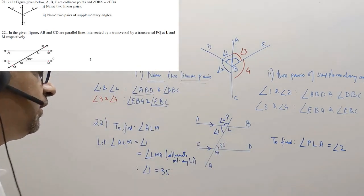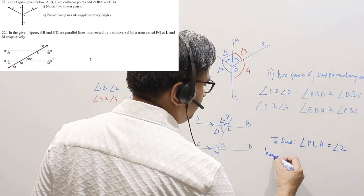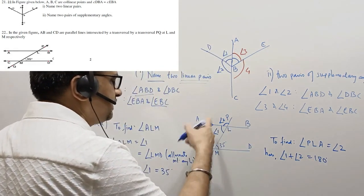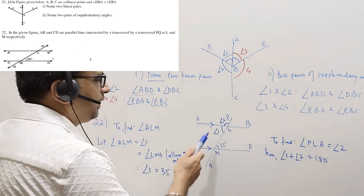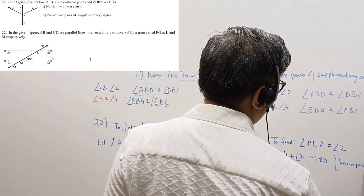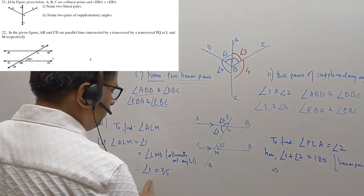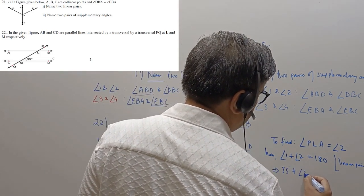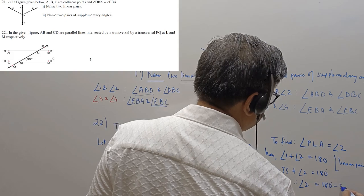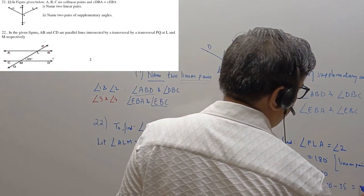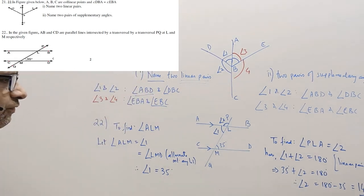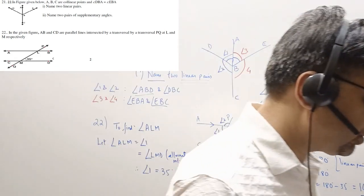Angle 1 and angle 2 form a linear pair. Angle 1 plus angle 2 is equal to 180 degrees. They are adjacent angles and supplementary. We have already found the value of angle 1, which is 35. So 35 plus angle 2 equals 180. Therefore angle 2, which is equal to 180 minus 35 degrees, comes to 145 degrees. That's question number 22.